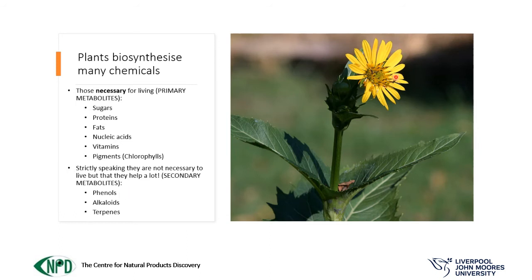Secondary metabolites are not necessary for the plant to live, but they help a lot — in this case, to attract pollinators and insects to the flower. These yellow pigments are phenols, mostly what we call flavonoids, which comes from the Greek word for yellow. Flavonoids are yellow substances, all of phenolic nature because they contain phenol functional groups in their chemistry. Alkaloids are those which contain nitrogen, and terpenes are those made without phenols or nitrogens.